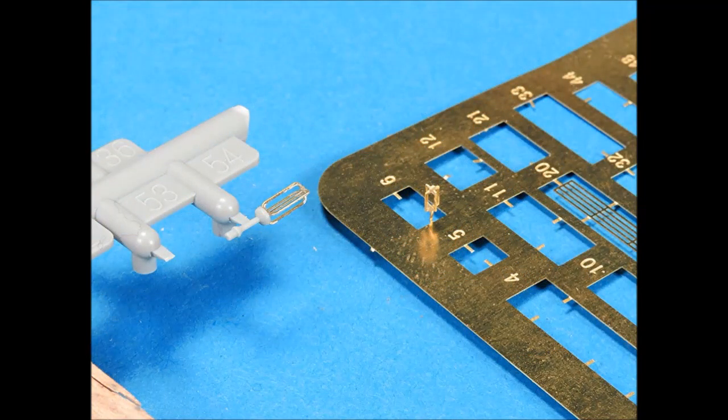The tiny photo etched radio direction finder was bent up and then the cross piece was added using Elmer's white glue so that it could be properly positioned. The larger plastic radio direction finder had its photo etched parts attached with white glue before the part was removed from the tree. In both cases, it was easier to assemble these small parts prior to removing them from their respective trees.